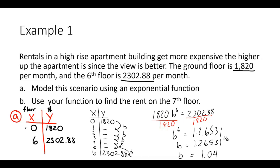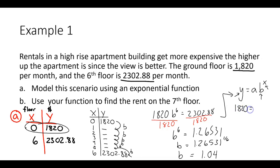The next step is to find the a value. We can do it the old way, or I have a shortcut. We take y = a·b^x, plug in the b value we just solved, plug in x and y. I'm going to pick the first point and plug in 0 for x, 1820 for y, and 1.04 for b.